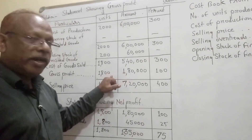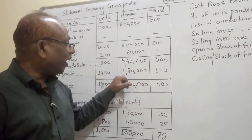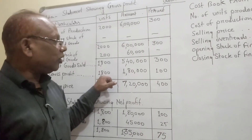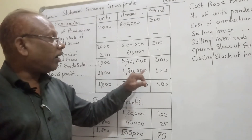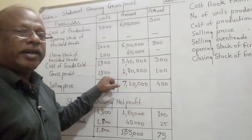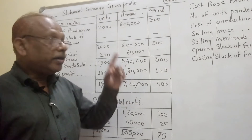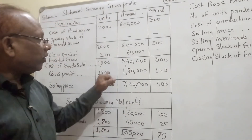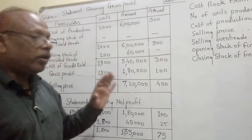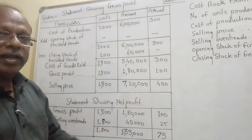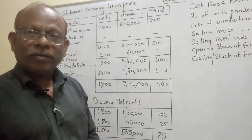The gross profit per unit is 100 rupees, and we sold 1800 units, so the gross profit is 1,80,000 rupees. We have found the gross profit as required by the problem. Now we also need to find the net profit, so we have to compute a separate table where we subtract selling and distribution expenses from gross profit.